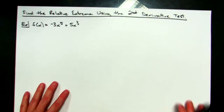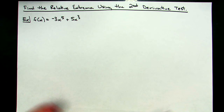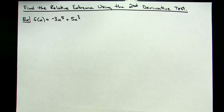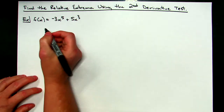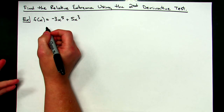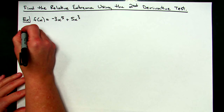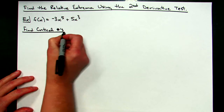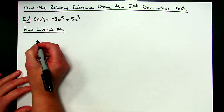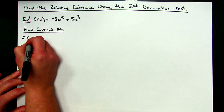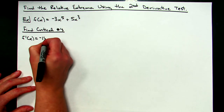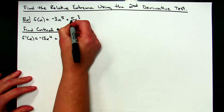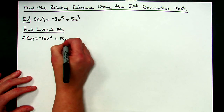Let's take a look at an example. Suppose you need to find the relative extrema using the second derivative test. I've used f of x equals negative 3x to the fifth plus 5x to the third. First, I need to find my critical numbers because this is where my relative extrema is going to live. The first derivative f prime of x is going to be negative 15x to the fourth plus 15x squared.